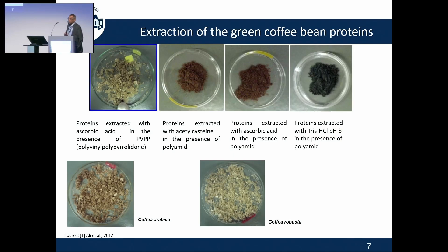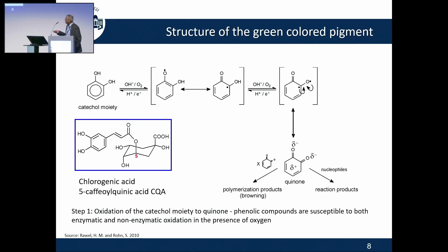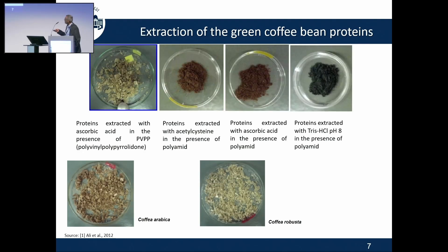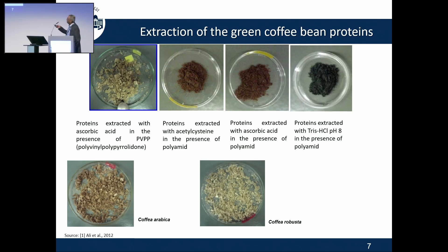If you try to extract those proteins, it depends on the conditions you apply. If you use a technical processing aid like polyvinylpolypyrrolidone, it binds the phenolic compounds and you get a very light-coloured protein sample. If you work with polyamide as a technical assistant, then you get very dark-coloured proteins. If you work with ascorbic acid, you get dark-coloured proteins. If you work at pH 8, you get green-coloured proteins. We took this as the best option and tried to get a good amount of proteins to investigate further.